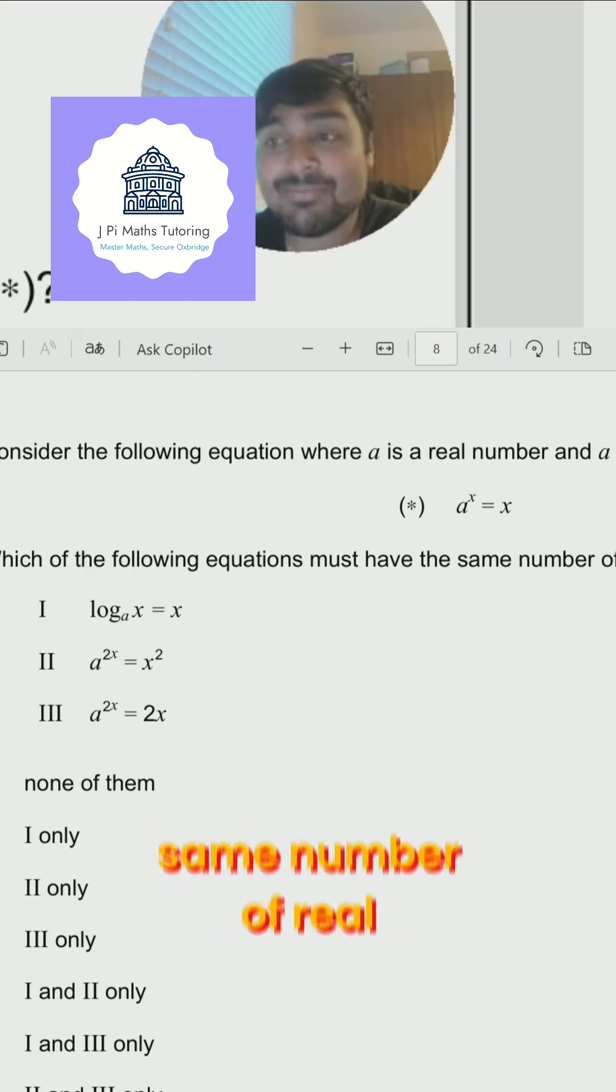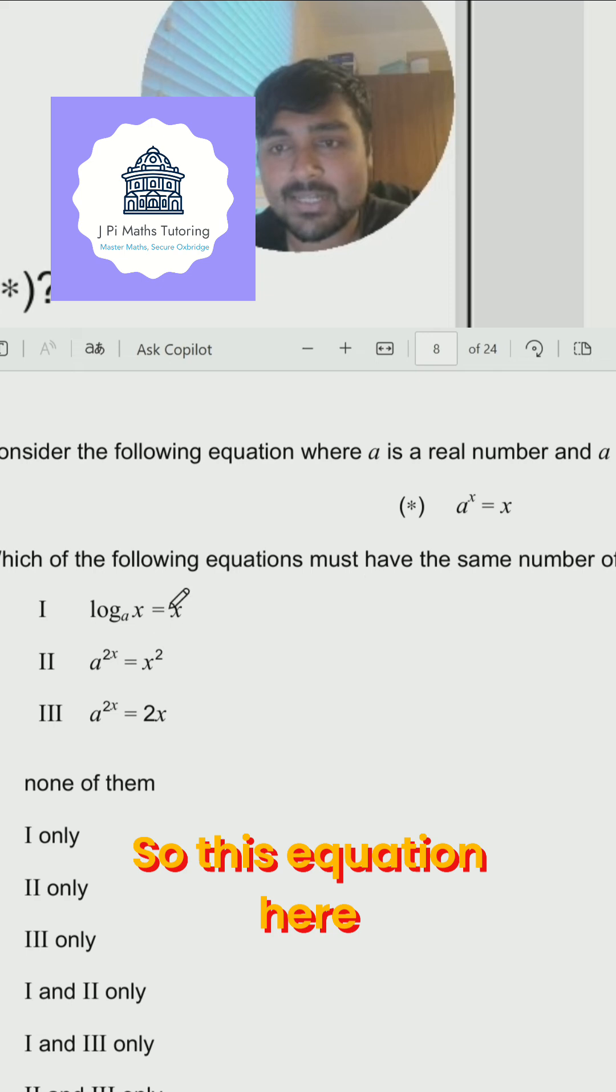Which of the following equations must have the same number of real solutions as star? So this equation here. And we've got three options here.